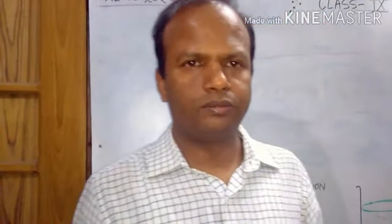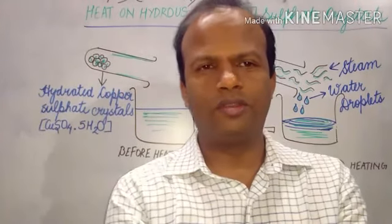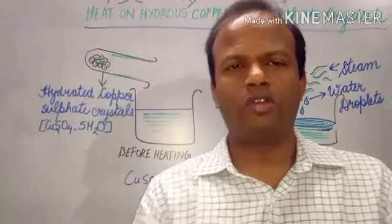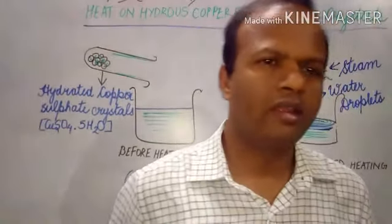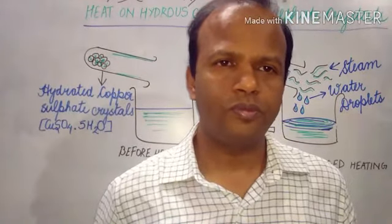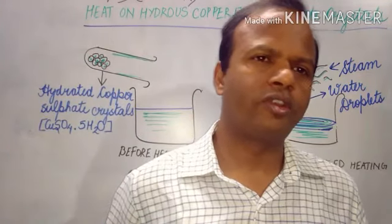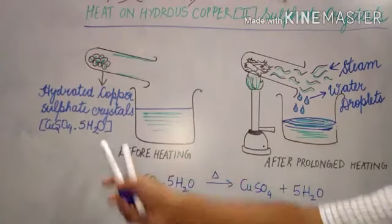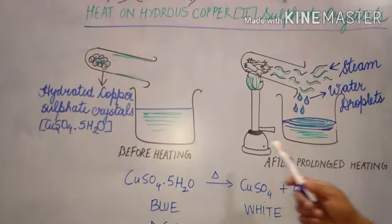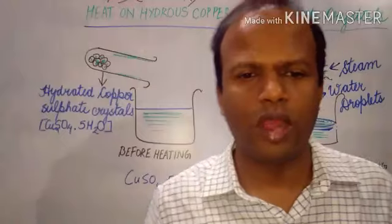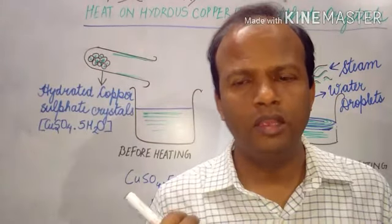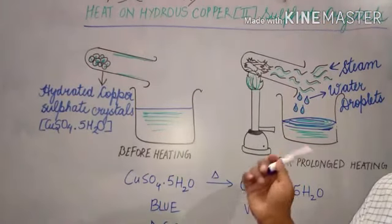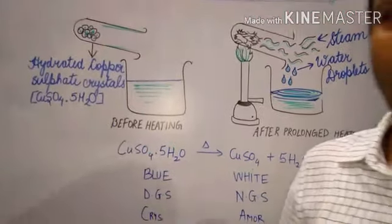Hydrated substances are those which contain water molecules in loose chemical combination with them, obtained through the process of crystallization. Anhydrous crystals are those formed through crystallization that do not contain any water molecules. For example, copper sulphate CuSO₄·5H₂O is a hydrated copper sulphate crystal. Any hydrated substance can be made anhydrous by simply heating it above 100°C — it will lose its water of crystallization.